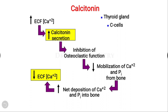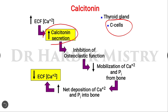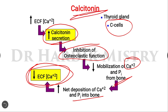The third hormone is calcitonin, released from the C-cells of the thyroid gland. When calcium ion concentration in the extracellular fluid increases, calcitonin secretion rises, causing inhibition of osteoclastic activity — stopping bone destructive activity. This decreases mobilization of calcium and phosphate from bone, increases net deposition of calcium and phosphate in bone, and ultimately decreases extracellular calcium concentration. Calcitonin has the opposite effect of parathyroid hormone and 1,25-DHCC, which both increase blood calcium.